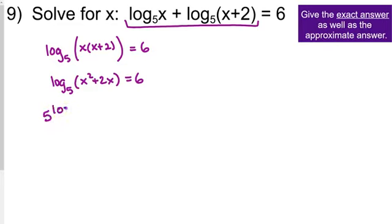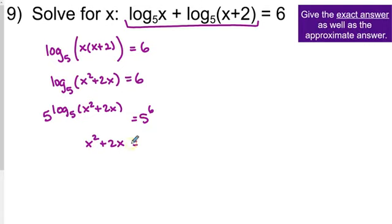This now looks like one of the easier logarithm equations. We exponentiate: 5 to the left side equals 5 to the right side, leaving x squared plus 2x equals 5 to the sixth power, which is 15,625. Actually, let's change that 6 to a 2 to make it a more manageable problem — so 5 squared is 25.